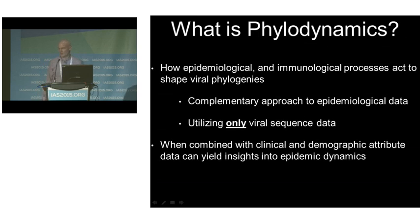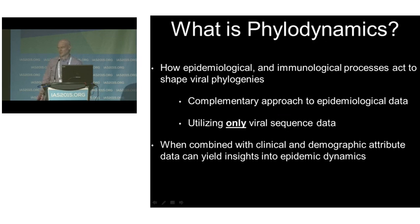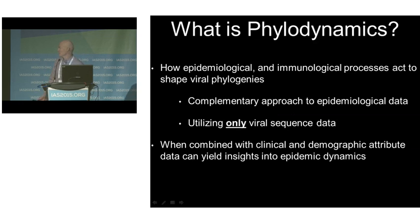Let's start off by talking about what is that fancy word phylodynamics and what does it actually mean. Phylodynamics is the study of how epidemiological and immunological processes act to shape viral phylogenies. It's a complementary approach to epidemiological approaches, done using only the sequence data — often a secondary use of sequence data that was sequenced for clinical or other reasons. When combined with clinical and demographic attributes, it can yield interesting insights into epidemic dynamics that are hard to obtain otherwise.